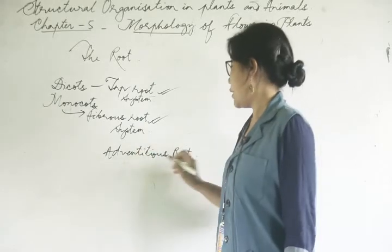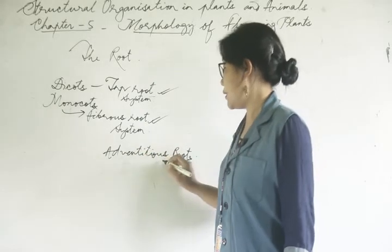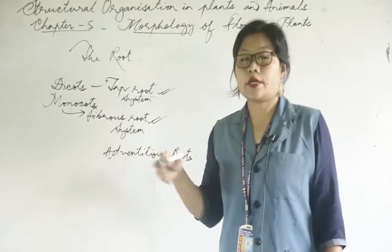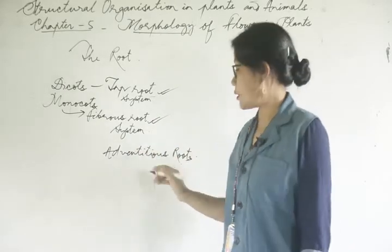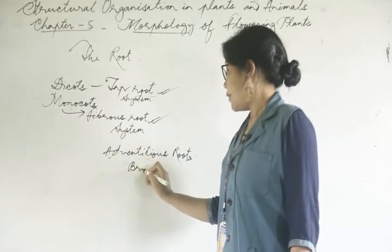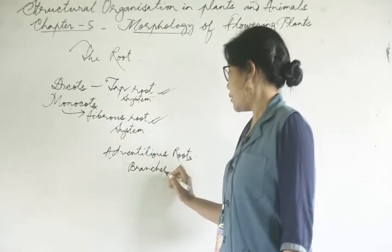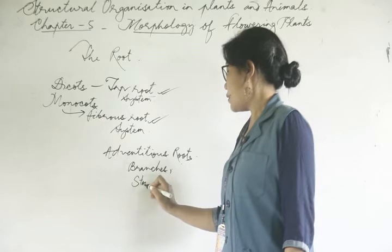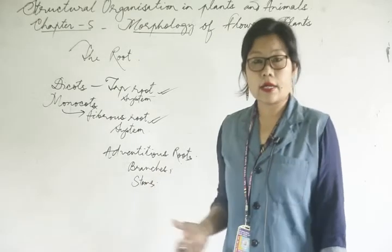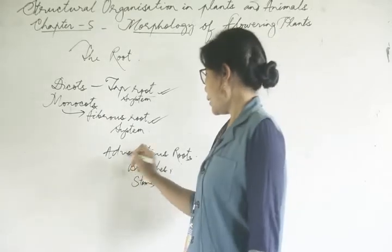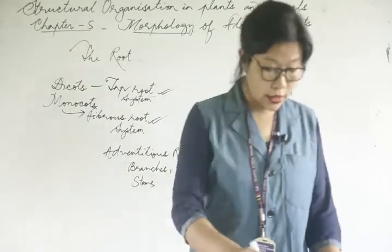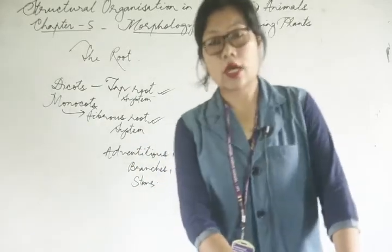The adventitious roots are made in this particular part — from a branch or stem branch. This is adventitious root system.